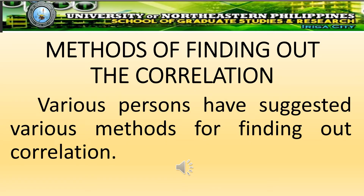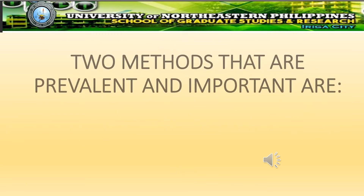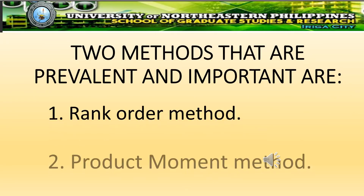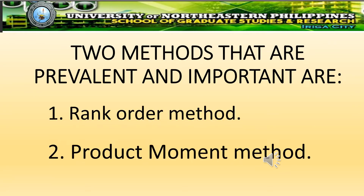Methods of finding out correlation. Various persons have suggested different methods for finding out correlation. Two methods that are prevalent and important are: 1. Rank order method, and 2. Product moment method.